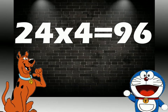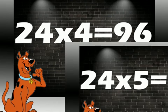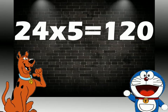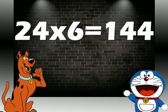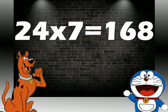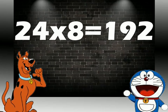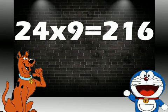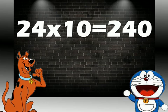24 ones are 24. 24 twos are 48. 24 threes are 72. 24 fours are 96. 24 fives are 120. 24 sixes are 144. 24 sevens are 168. 24 eights are 192.